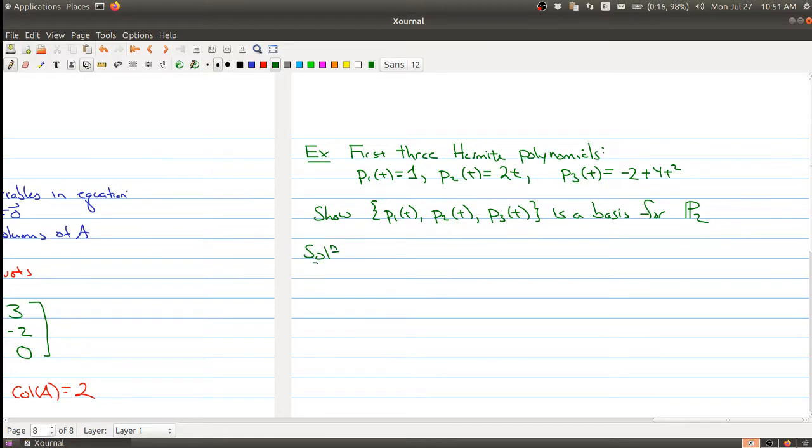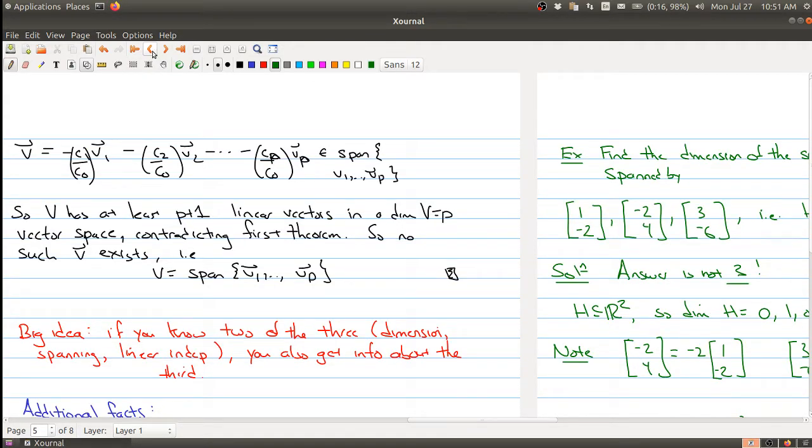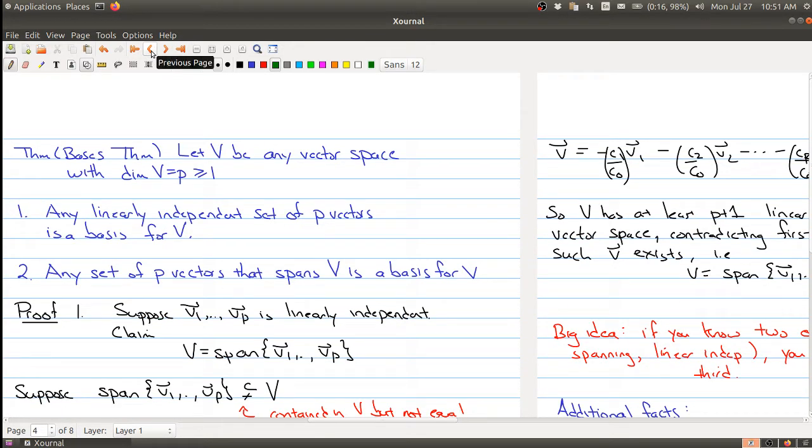So our solution goes as follows. So the dimension of p2 is 3. So we only need to show that p1(t), p2(t) and p3(t) are linearly independent. So if we can show that these three polynomials are linearly independent in a three-dimensional vector space, we go back here and we can use the basis theorem.